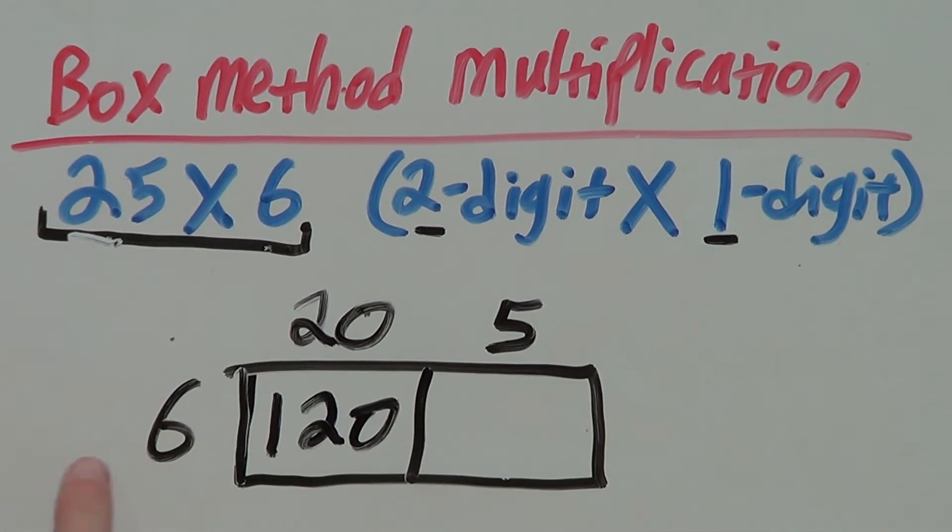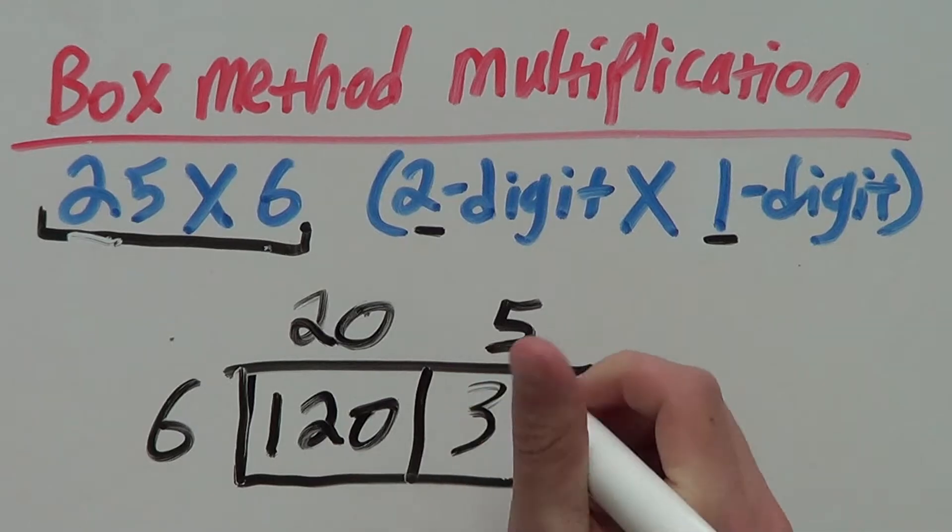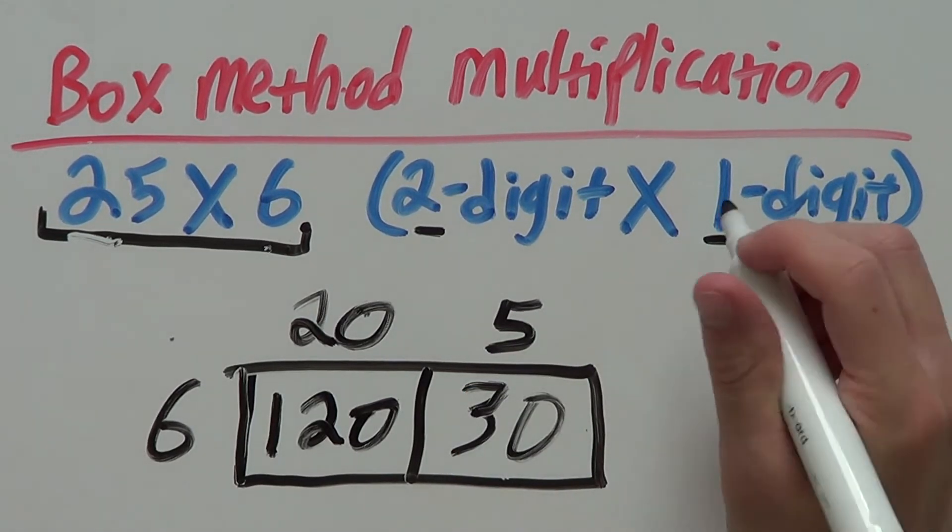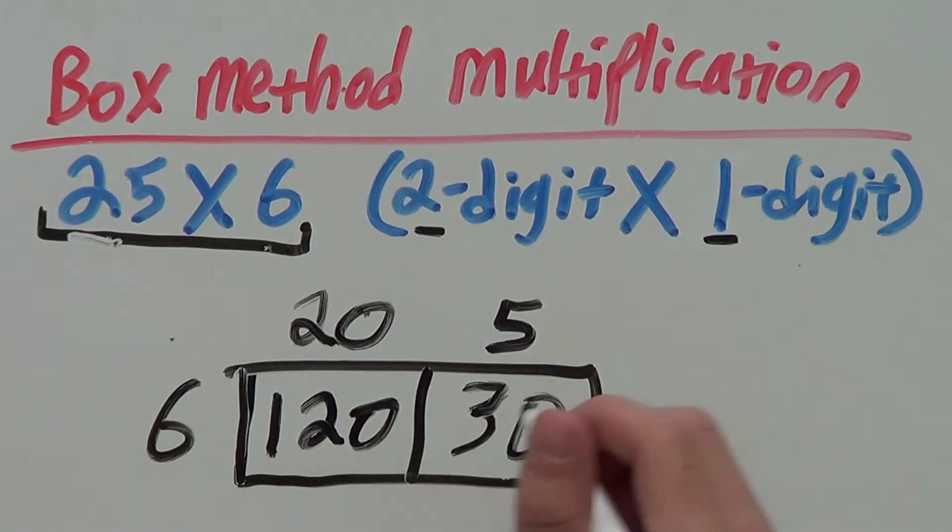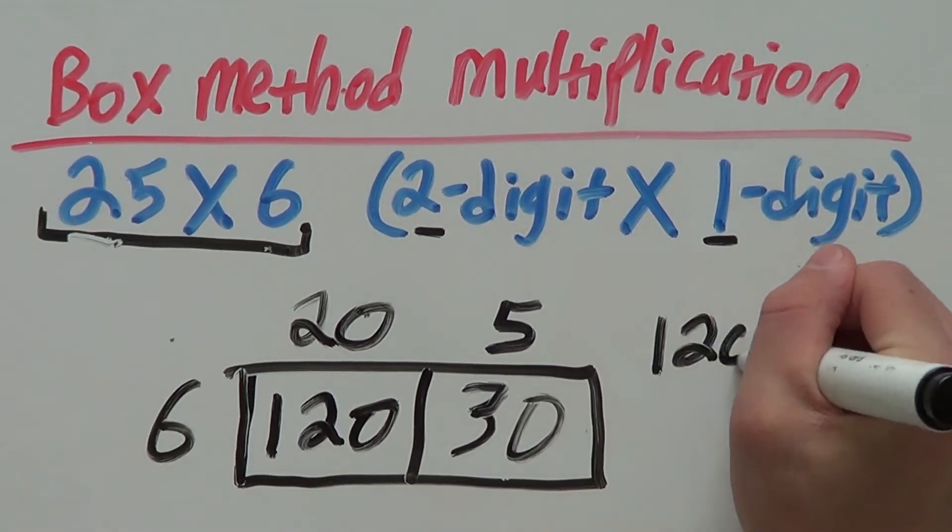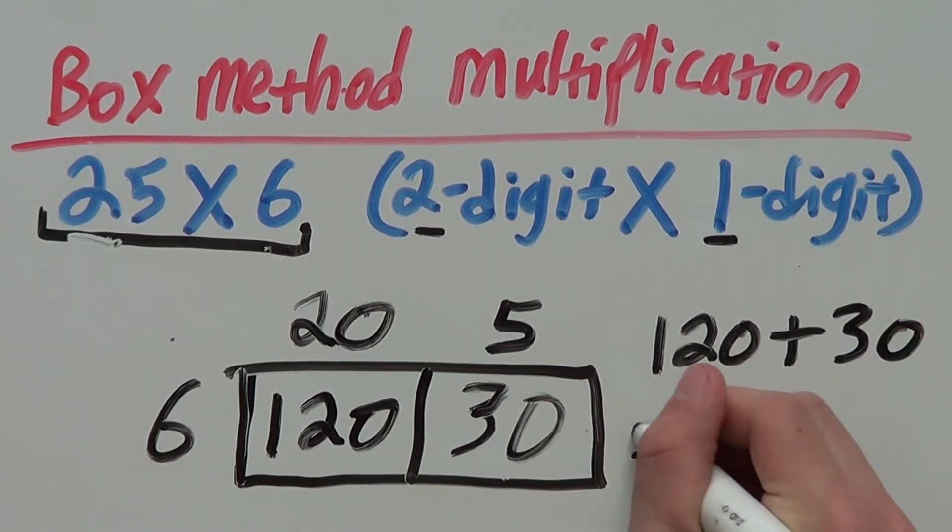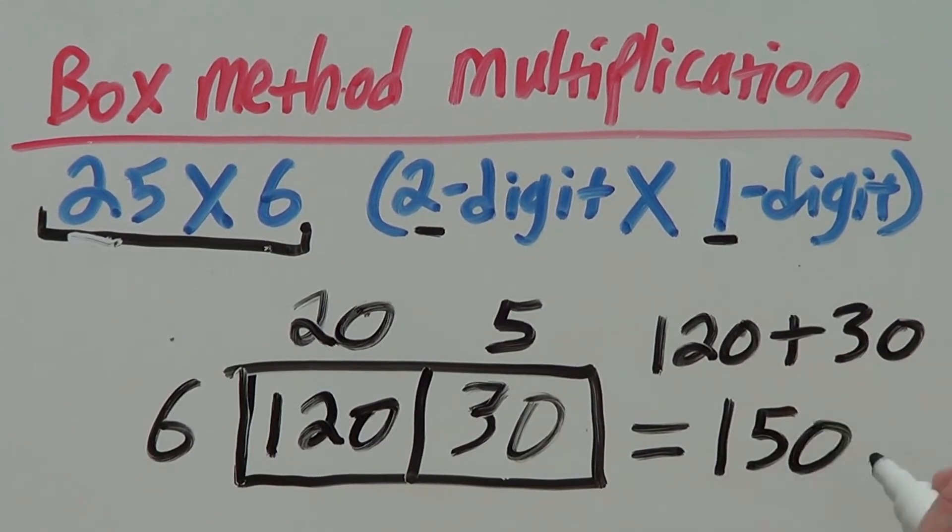Next up, we have this box here, which is 6 times 5. 6 times 5 is 30. Our last step is to add together our 2 results, which is 120 plus our second result of 30. That gives us a total of 150.